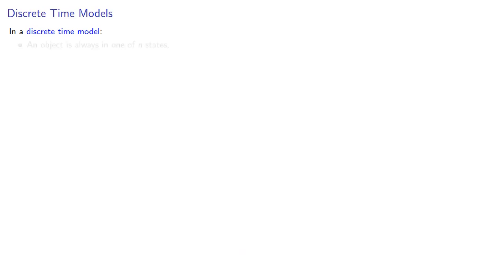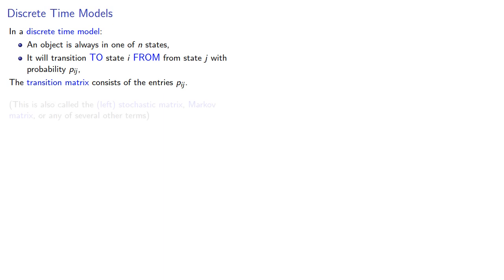In a discrete time model, an object is always in one of n states. It will transition to state i from state j with probability pij. The transition matrix consists of the entries pij. This matrix is also called the left stochastic matrix, the Markov matrix, or any of several other terms.